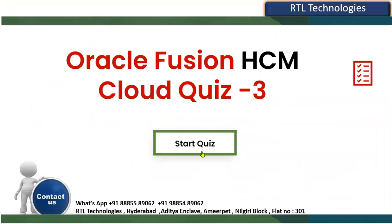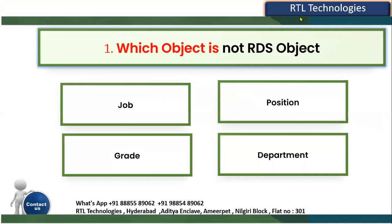This quiz is related to Human Capital Management. The question is: which object is NOT a reference data set object? In HCM we have a very important concept called RDS — Reference Data Set. The objects listed are job, grade, department, and position. We have four options here.